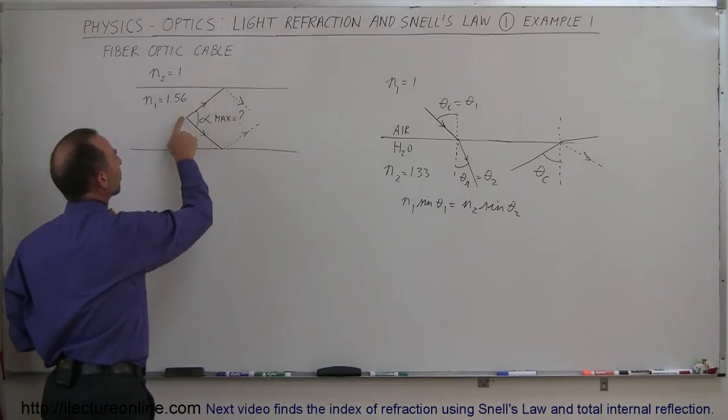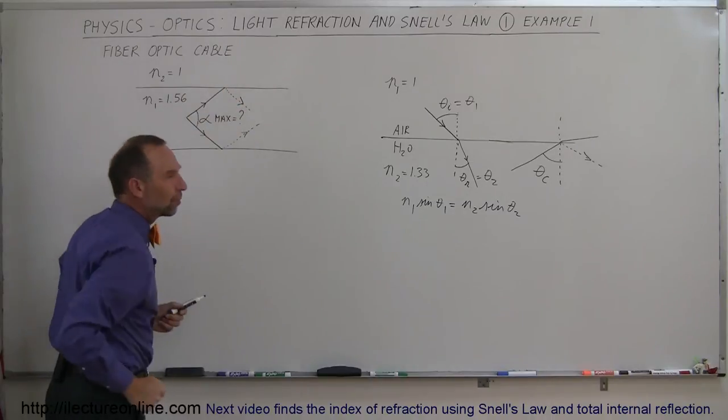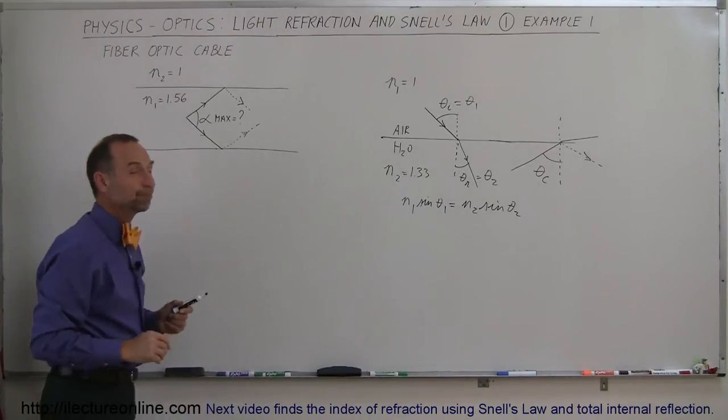So what we're trying to find out here is what is the maximum angle between two rays from a particular point in the middle of the cable towards the edge of the cable, that these two rays of light can make and still remain inside the fiber optic cable without leaving the fiber optic cable.